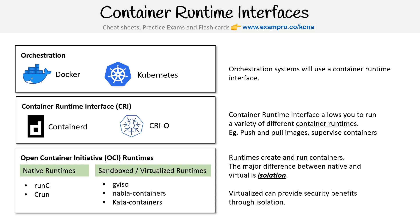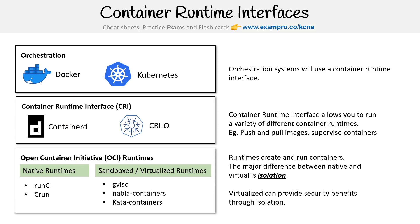Hopefully that helps make sense of the layers: orchestration chooses a container runtime interface, and then from there it chooses a runtime. By default when using Kubernetes, most times it's going to be Kubernetes, containerd, and runC. There used to be more container runtimes, but many are no longer maintained. The new list you'll mostly see is runC, Nabla, and Kata.